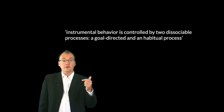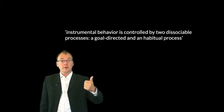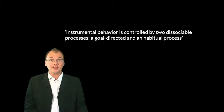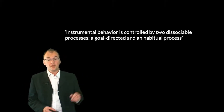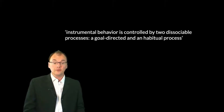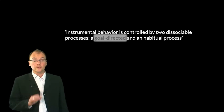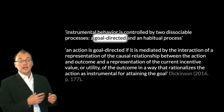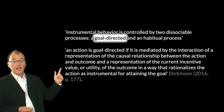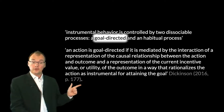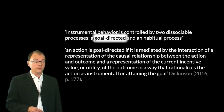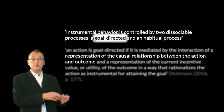But what's the problem? So far I've said there's a notion of instrumental action, a question about what relates the action to the outcome, and a very standard answer. What complication might we encounter? Here's Tony Dickinson. He says: instrumental behavior is controlled by two dissociable processes — a goal-directed process and a habitual process. What's a goal-directed process? Dickinson says an action is goal-directed if it's mediated by the interaction of a representation of the causal relationship between the action and the outcome, and a representation of the current incentive value or utility of the outcome, in a way that rationalizes the action as instrumental for attaining the goal. You might want to spend some time with this quote because Dickinson is very important.